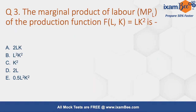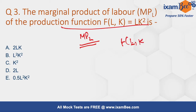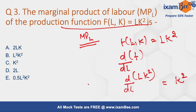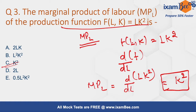Moving forward to the next question — here we have to find the marginal product of labor, and the production function is given to us as LK². To find the marginal product, we take d/dL of the function LK², which gives us K². So the marginal product of labor equals K², and option C is the right answer.